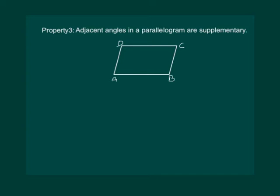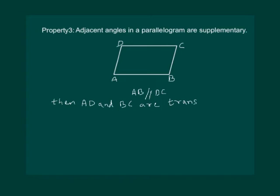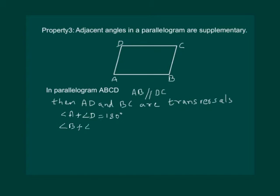Basically, adjacent angles lie on the same line — like A and B are lying on line AB. In parallelogram ABCD, we know that AB is parallel to DC. Then AD and BC are the transversals. This implies that angle A plus angle D should be 180 degrees.